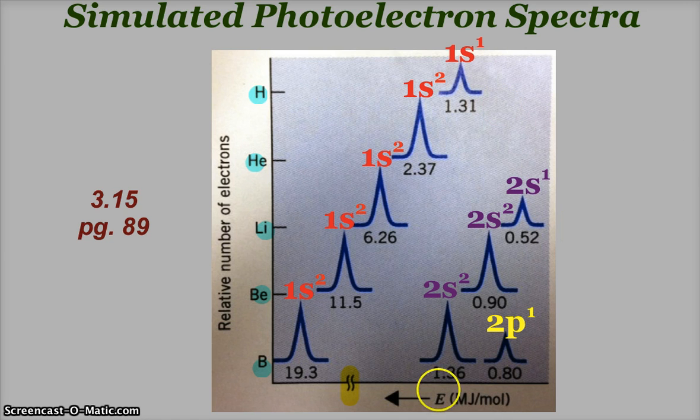You just have to be careful, because some photoelectron spectra have the zero axis point for the energy here. Some have zero over here. These spectra have zero over here. So you just have to watch where the zero is, and I'll explain why here in a second.